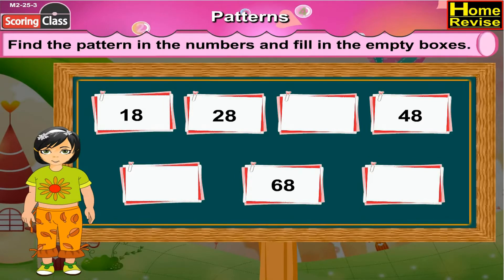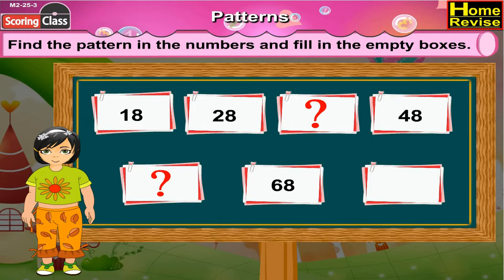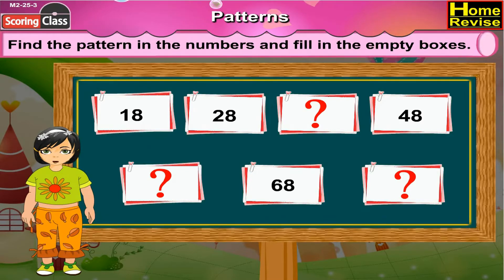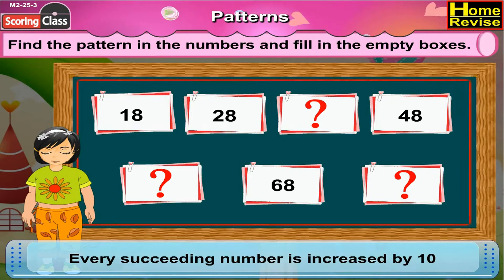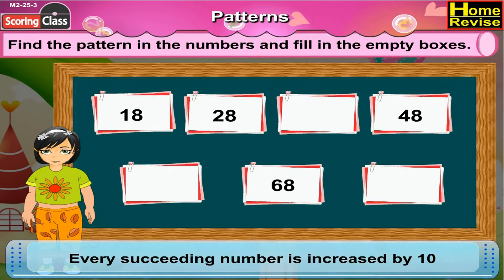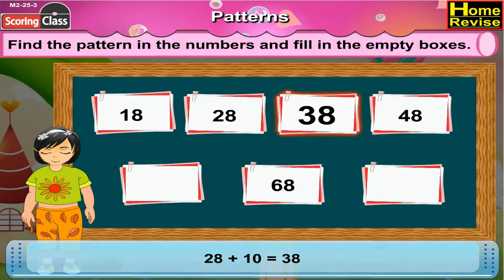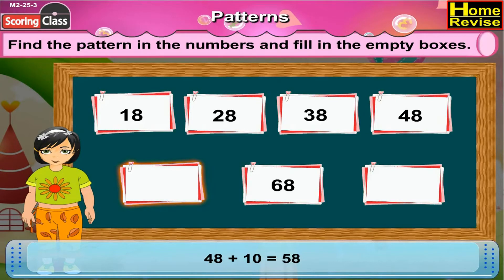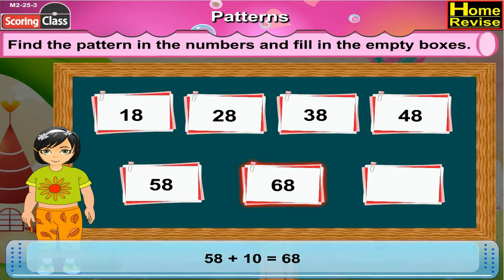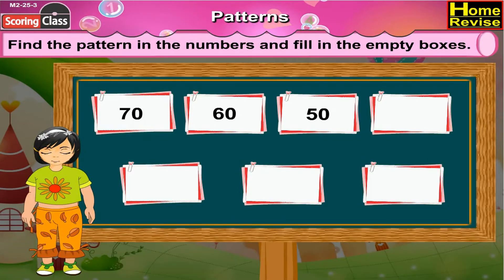Now the next number strip. It has 18, 28, an empty box, 48, an empty box, 68, and an empty box. Now if you notice this number strip, you will realize that every succeeding number is increased by 10. As in 18 plus 10, you got 28. Then 28 plus 10, here it would be 38. Then 38 plus 10 is 48. Now 48 plus 10, the answer is 58. 58 plus 10 is given 68. 68 plus 10 is 78. So 78 will come in the last box.